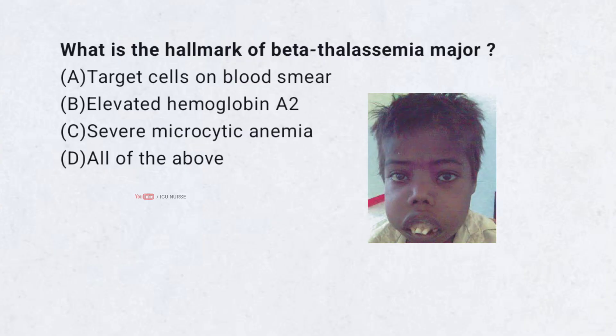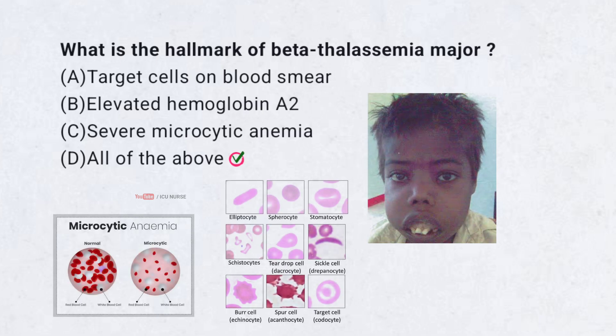What is the hallmark of beta thalassemia major? A. Target cells on blood smear, B. Elevated hemoglobin A2, C. Severe microcytic anemia, D. All of the above. Correct answer: D. All of the above. Beta thalassemia major presents with severe anemia, target cells, and elevated hemoglobin A2 due to defective beta-globin synthesis.